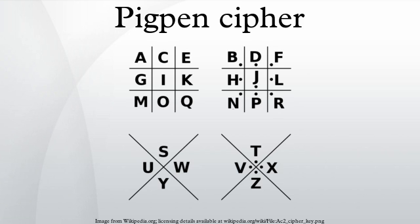Another commonly used system orders the symbols as grid, x, grid, x.